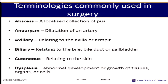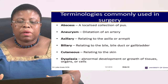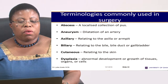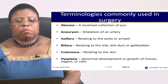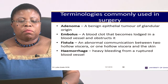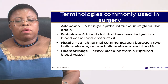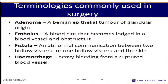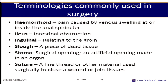For example, 'aneurysm' refers to the dilatation of an artery. You will be talking about aneurysm in Nursing 333 next semester at level 300. 'Cutaneous' refers to the skin. 'Abscess' is a collection of pus. There is also 'embolus,' which is a clot circulating in the blood, and 'hemorrhage,' meaning bleeding.